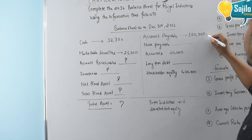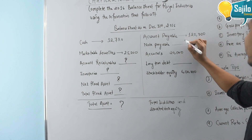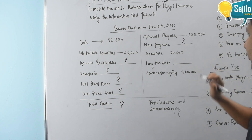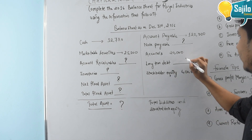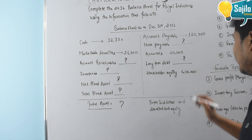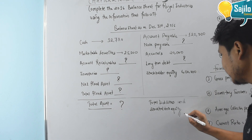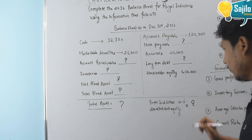On the liability and shareholder equity side: accounts payable is $1,20,000, notes payable is unknown, accruals is $1,20,000, long-term debt is unknown, shareholder equity is $6,20,000, and total liability and shareholder equity is unknown.